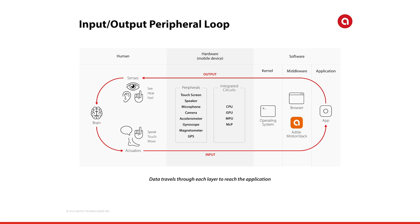The input-output peripheral loop starts by the user interacting with the input peripherals, which is processed through the hardware and software layers to reach the application, and then sends a response back to the output peripherals.